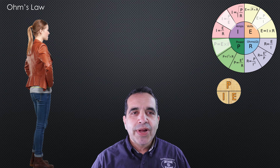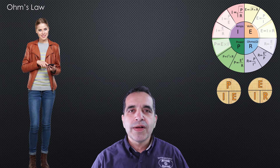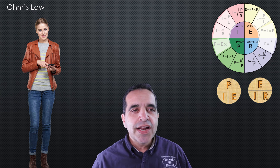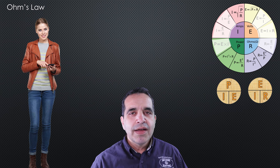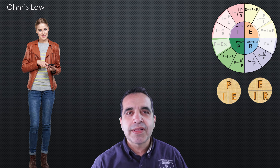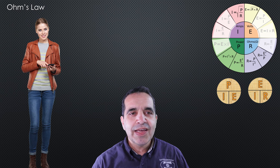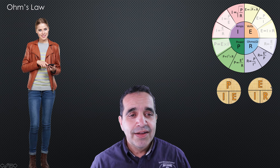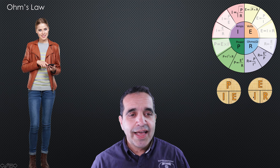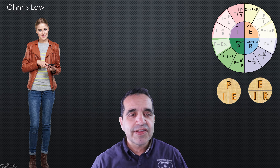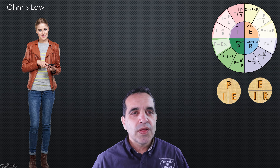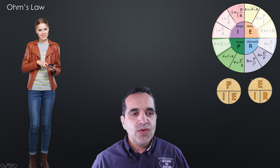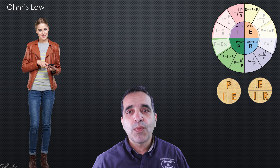With these two little tools — the power wheel and the Ohm's law wheel — we can know six of the 12 formulas. But what about all the other formulas with squares and square roots? How can we use these two wheels to derive those formulas if we don't have them memorized? That's what I want to show you today.